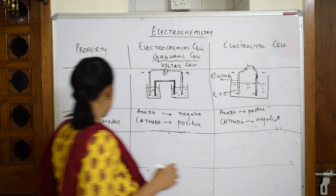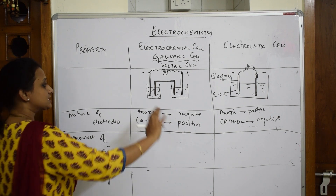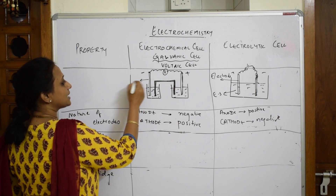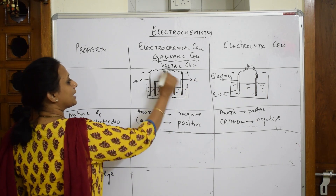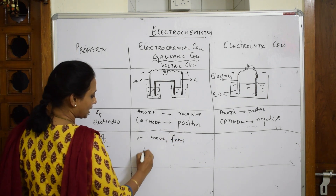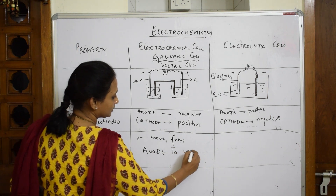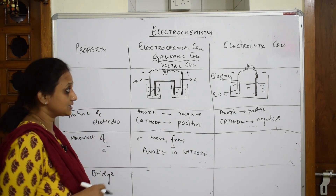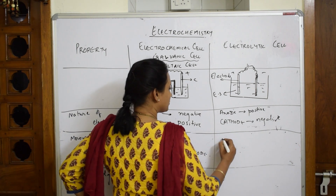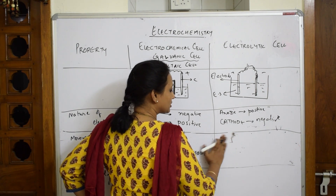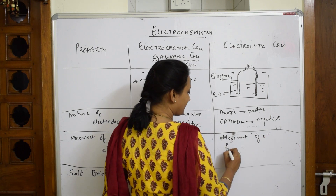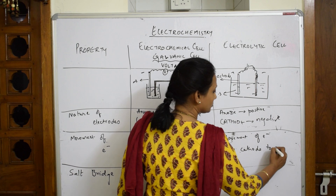Next, let's look at the movement of electrons. In electrochemical cells, electrons always flow from the anodic compartment to the cathodic compartment — that is, electrons move from anode to cathode. In electrolytic cells, the movement of electrons is from cathode to anode, which is the reverse.